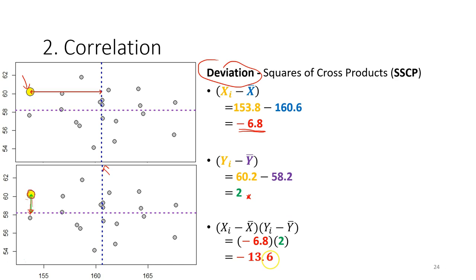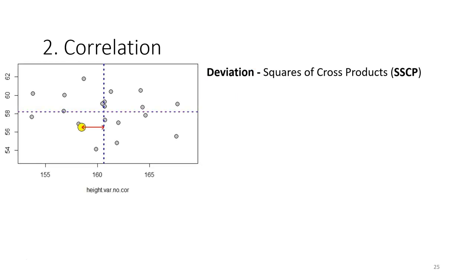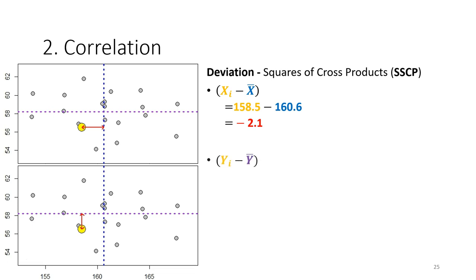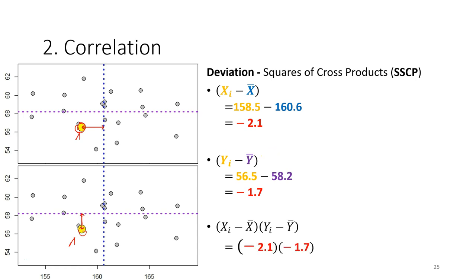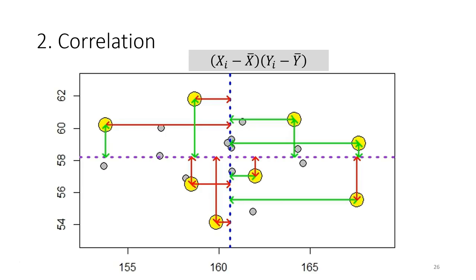The sign of the value depends on the location of the data point relative to the mean of both variables. For the next point, we calculate the mean deviation for the first variable, then for the second variable. If both the body height and body weight of a student are smaller than average, both deviations are negative, and multiplying two negative values gives a positive cross product.